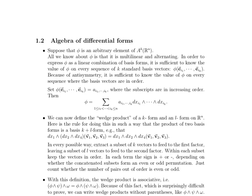With this, we can now define the wedge product of a k-form and an l-form on R^n. Here's the rule for doing this in such a way that the product of two basis forms is a basis k+l form. For instance, you have a one-form and a two-form, and you end up with a three-form. The way to calculate these is to extract a subset of k vectors to feed to the first factor. In this particular case, k equals 1 because we're dealing with a one-form. So first, you say v_1 is what this one-form is going to act on, and v_2 and v_3 are left over for the two-form to act on.